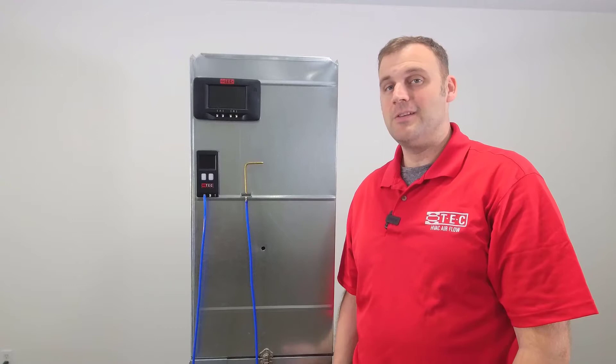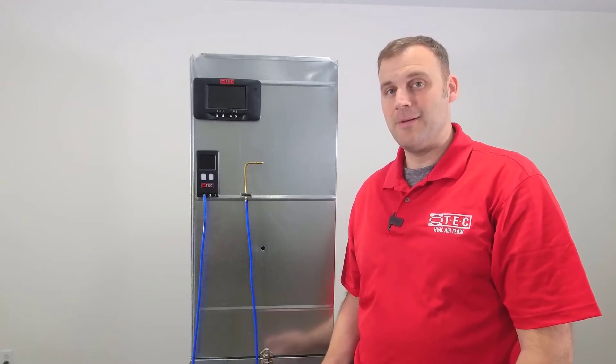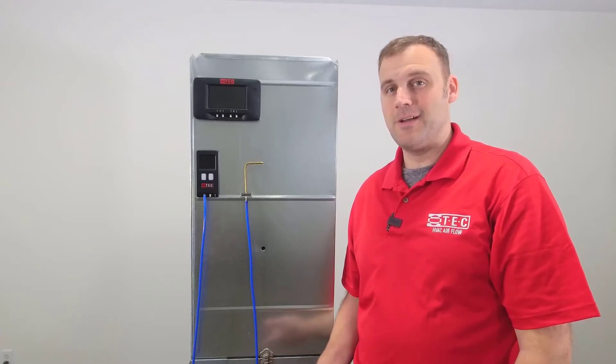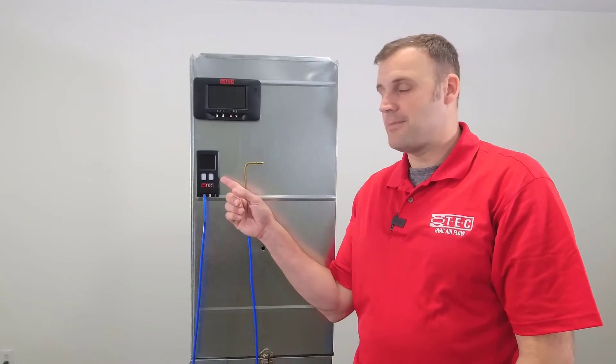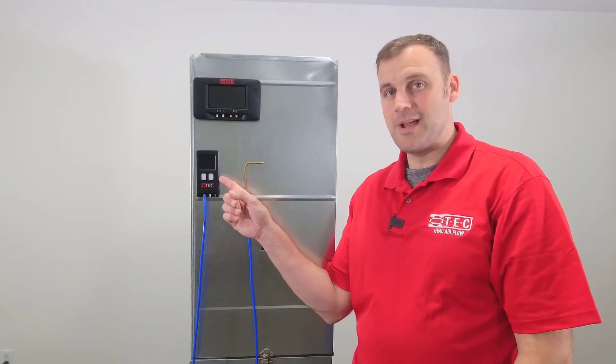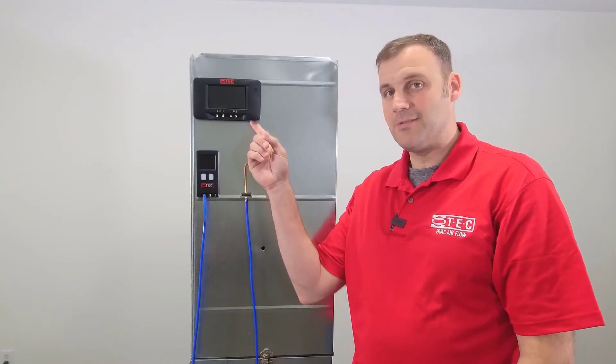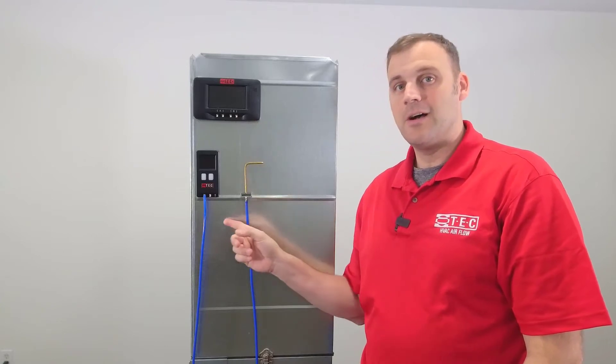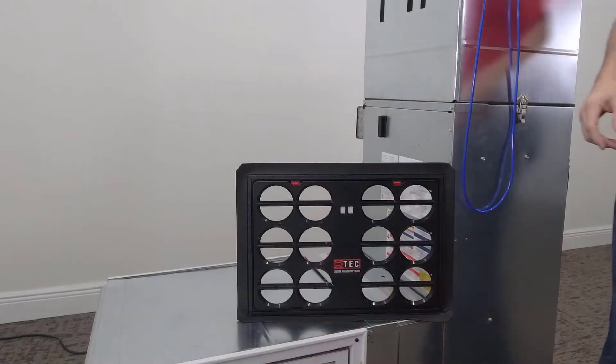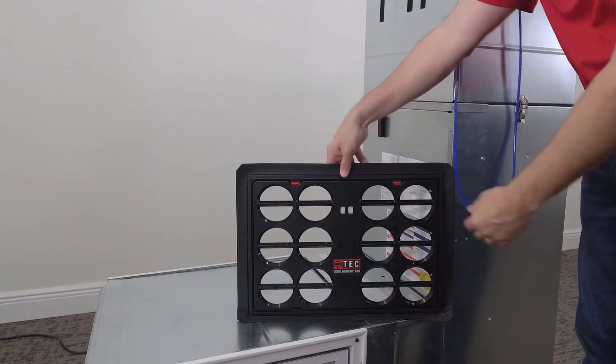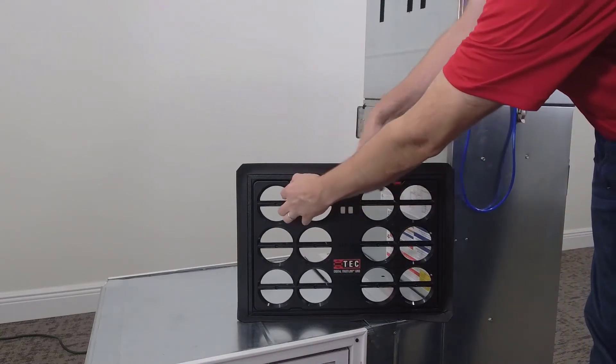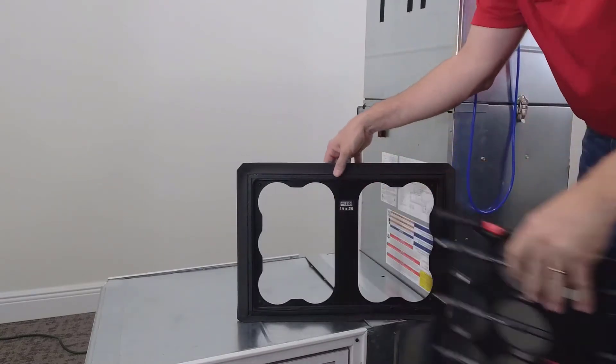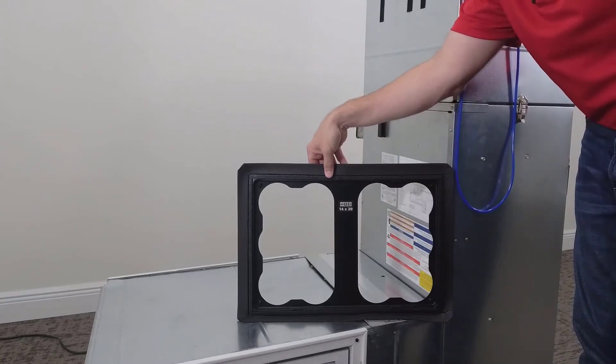Now let's go over the parts and pieces. In addition to the TrueFlow app and the Bluetooth capable device, we're going to need to select a manometer. You can either go with the DG8 or the DG1000. You'll need a static pressure probe, a hose, you'll also need the TrueFlow Grid, and at least one adapter plate for it to snap into.